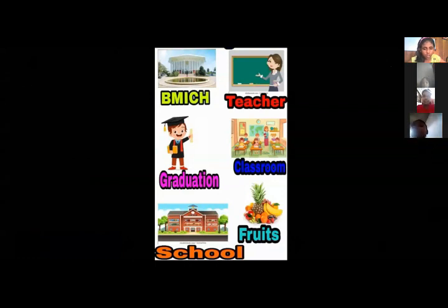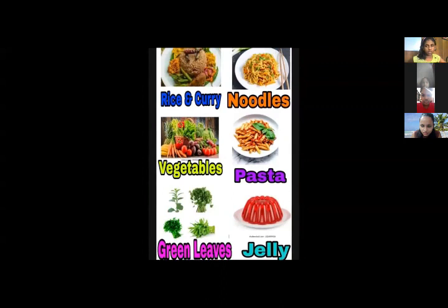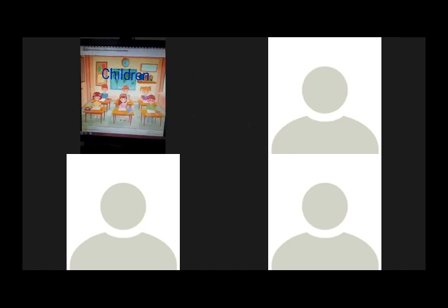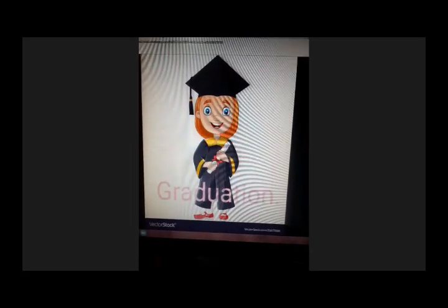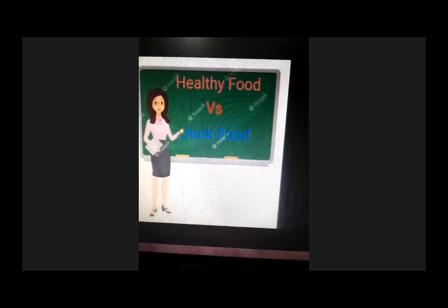Excuse me, teacher — this is our school. This is the classroom. These are the vocabulary words: vegetables, pasta, green leaves, jelly, cheese, pizza, chocolate, butter. This is school. This is classroom. This is teacher. This is children. This is Meena. This is Raj. This is Bhuvi. This is Shainal. This is graduation. This is BMICH. I showed some healthy food versus junk food pictures.